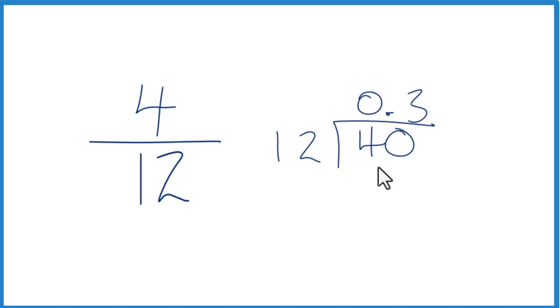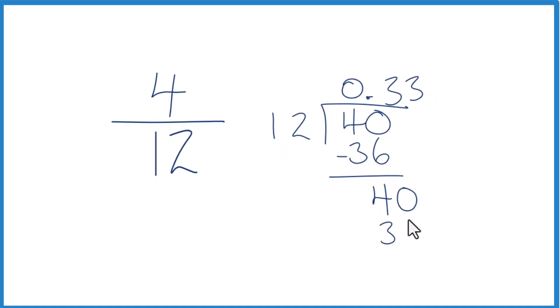3 times 12, that's 36, you subtract, and you get 4. Call it 40, we move over 1, 3 times 12, 36, you subtract,